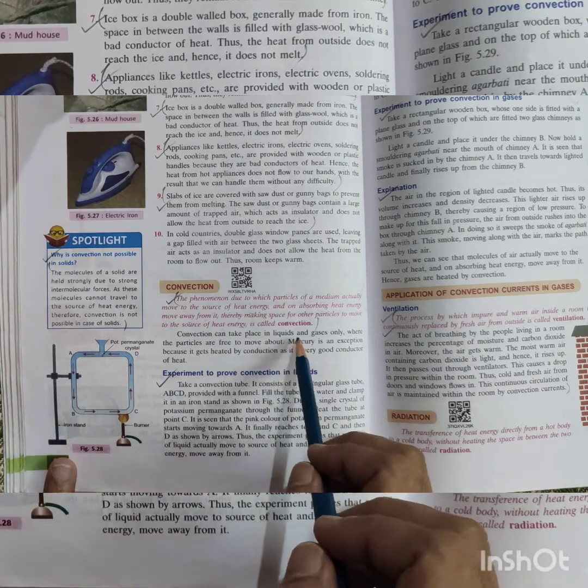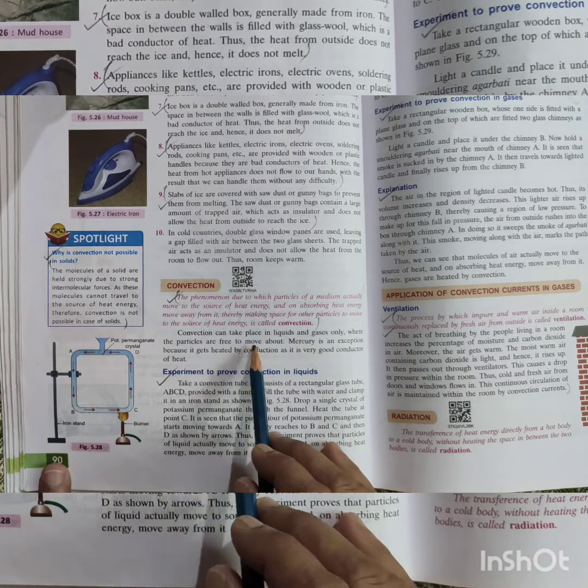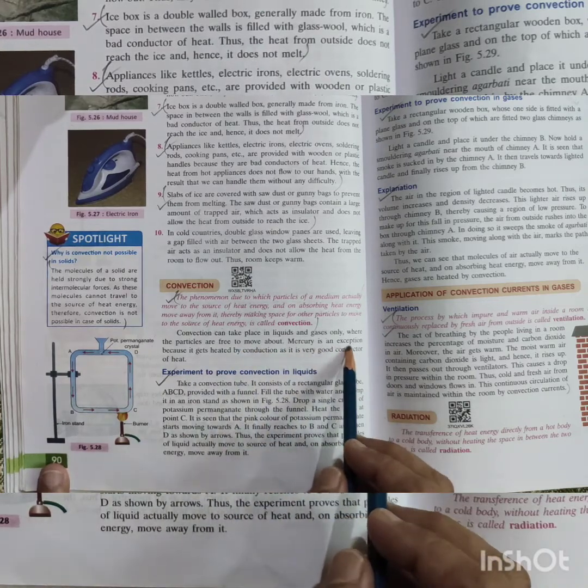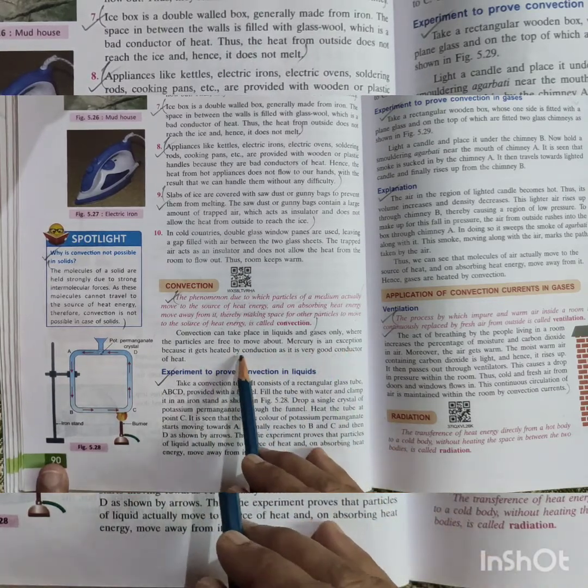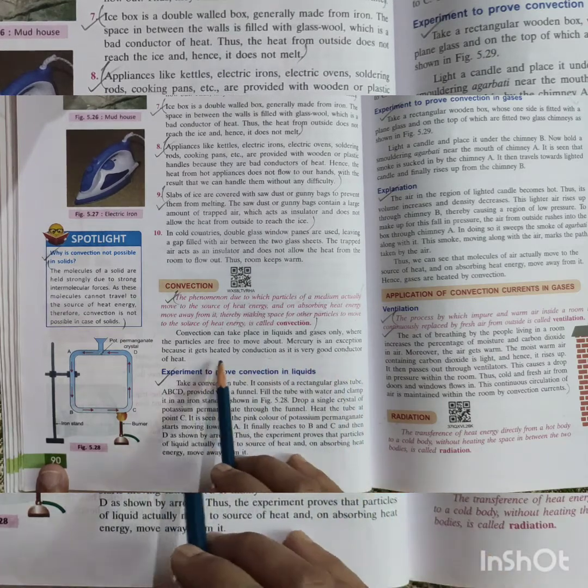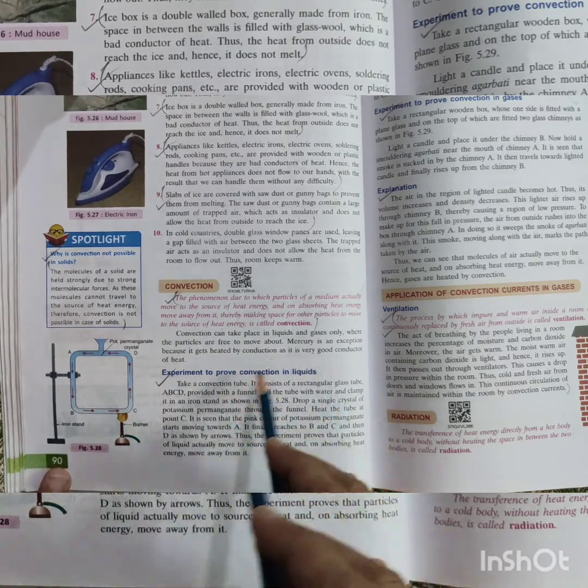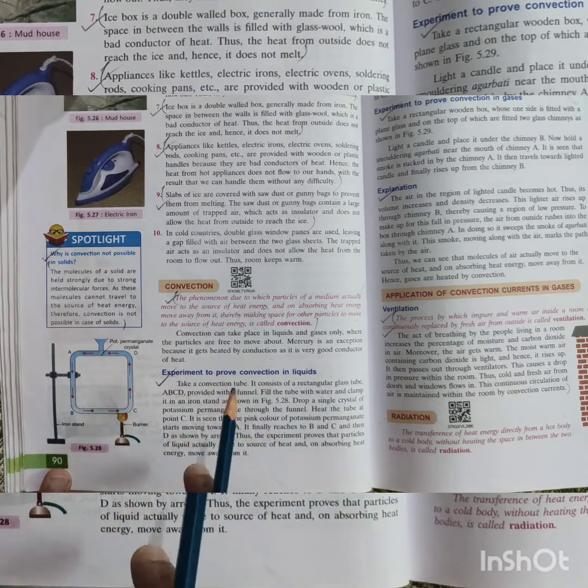Convection takes place in liquids and gases only, that means the fluids. Particles are free to move about. Mercury is an exception because it gets heated by conduction as it's a very good conductor of heat. This exception happens only for mercury, and we know that mercury is a good conductor of heat.